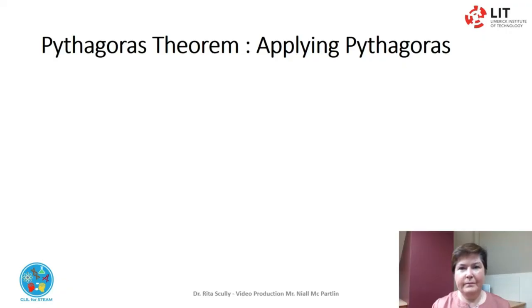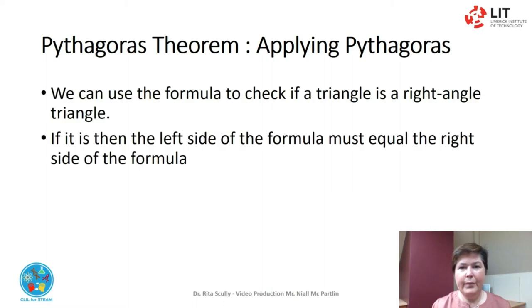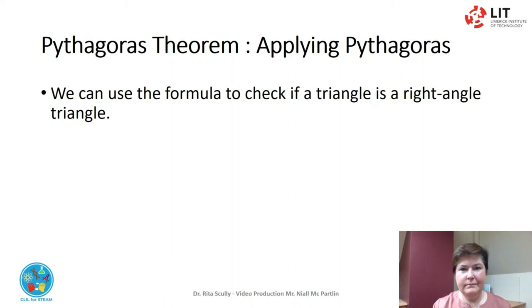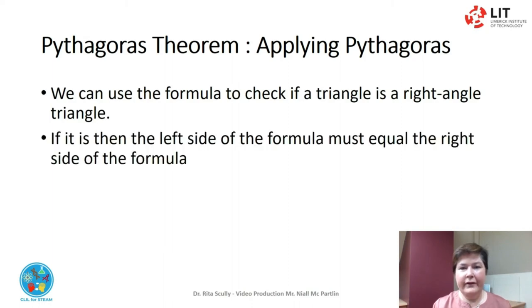Applying Pythagoras. We can use the Pythagoras theorem to check if a triangle is a right-angled triangle. If it is, then the left side of the formula must equal the right side of the formula: A squared plus B squared equals C squared.